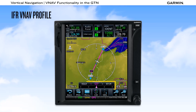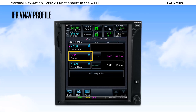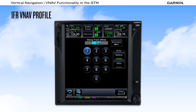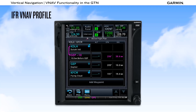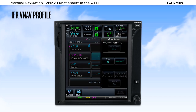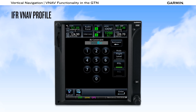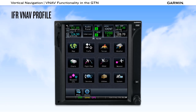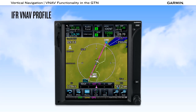We go into the active flight plan, select the Gopher VOR waypoint button, select the along track button, enter the 10-mile offset, and press enter. On the active flight plan page, we now see the new offset waypoint. Selecting the altitude field next to this waypoint, we enter 3,000 feet, select enter, and then save. Going to the map page, we can see the location of the altitude constraint and the TOD is showing.